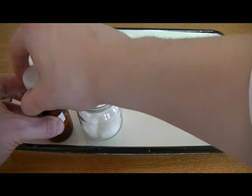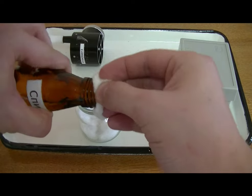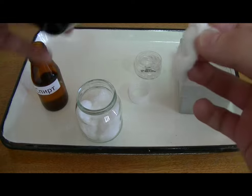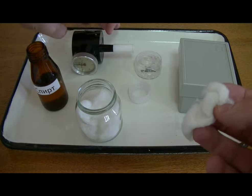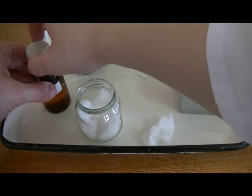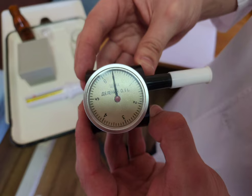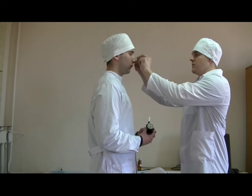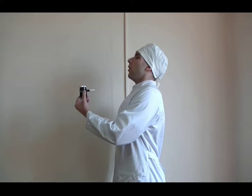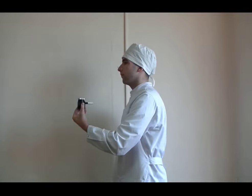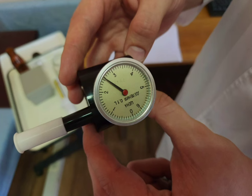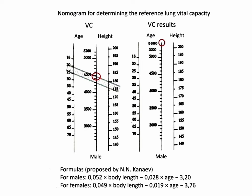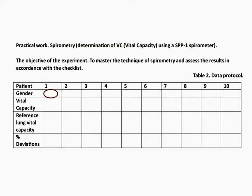Attach the mouthpiece to the spirometer. Disinfect the spirometer. This diagram shows the muscles that work during breathing. The spirometer result is recorded. Select the highest result and record the correct value in the self-monitoring diary.